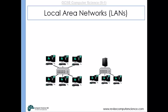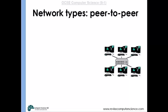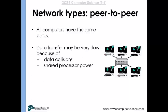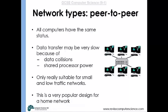There are two ways to set up a local area network: peer-to-peer or client-server. In a peer-to-peer network, all computers have equal status with no single computer overseeing the others. This can result in a slower network, data collisions, and shared processing power. It's suitable only for small networks with low traffic and is popular for home networks.